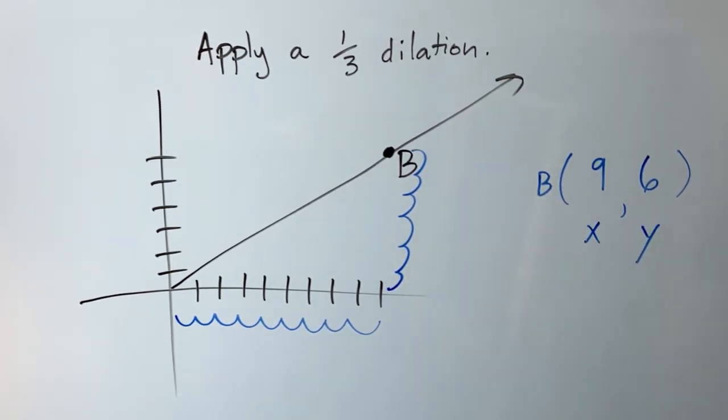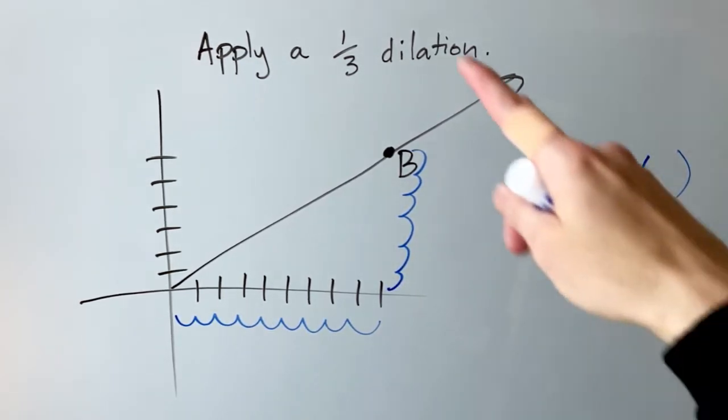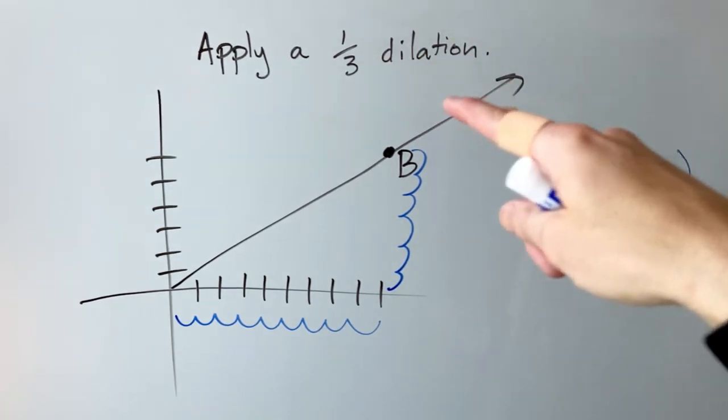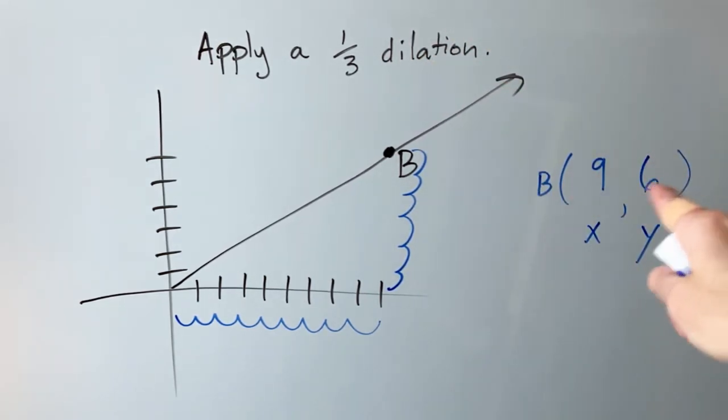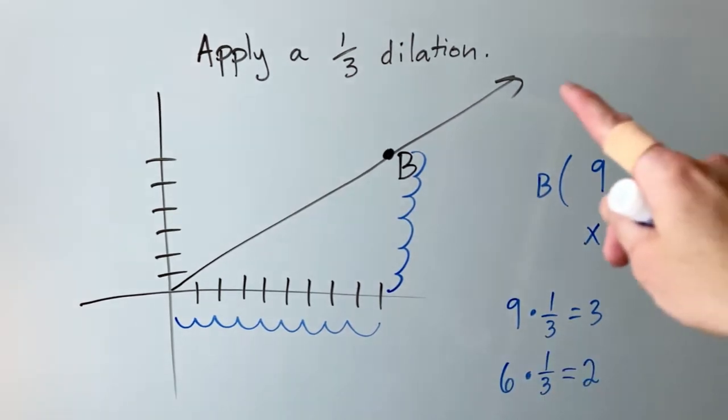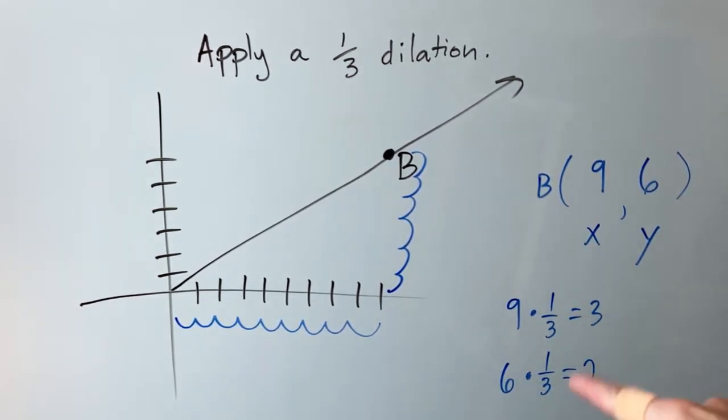So now we know that point B has the coordinates nine comma six. So what you have to do is take the one-third and multiply the coordinates here by one-third. So if you take nine and six and you multiply them by one-third, these are the numbers that you get, three and two.